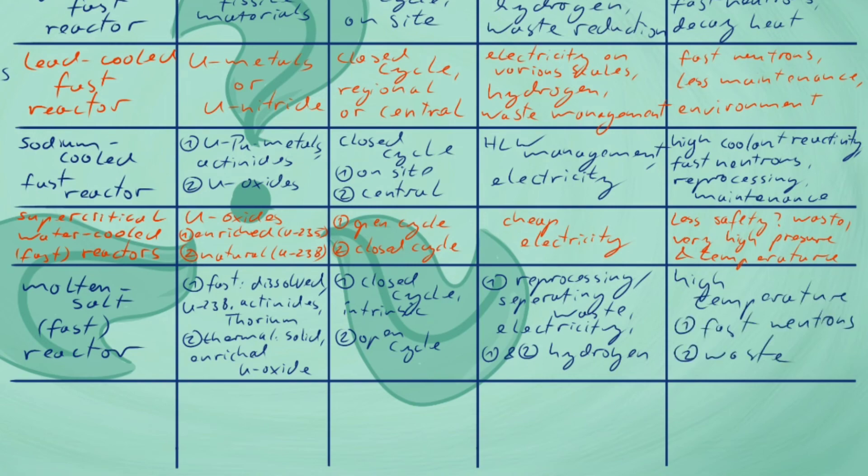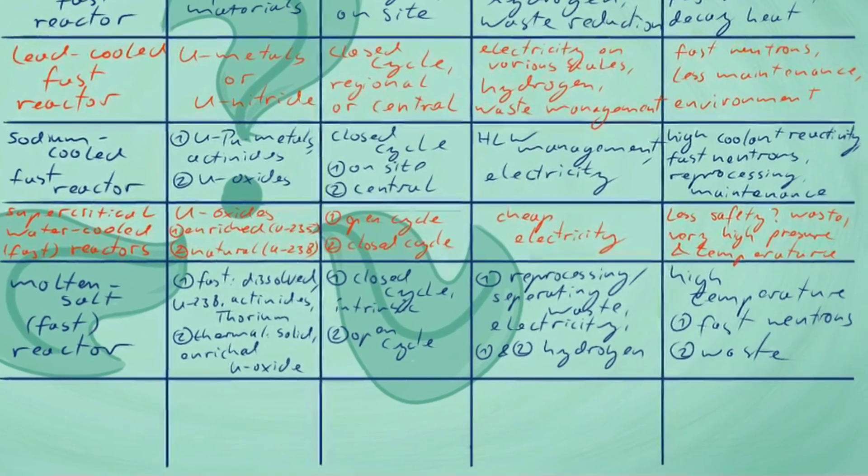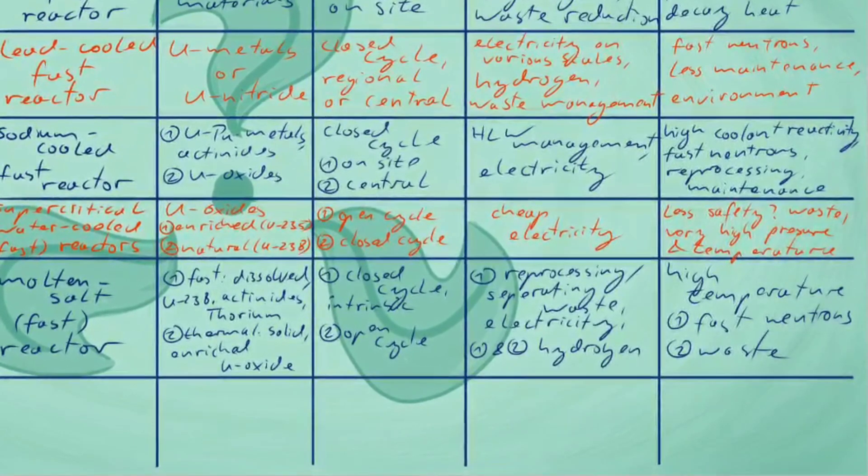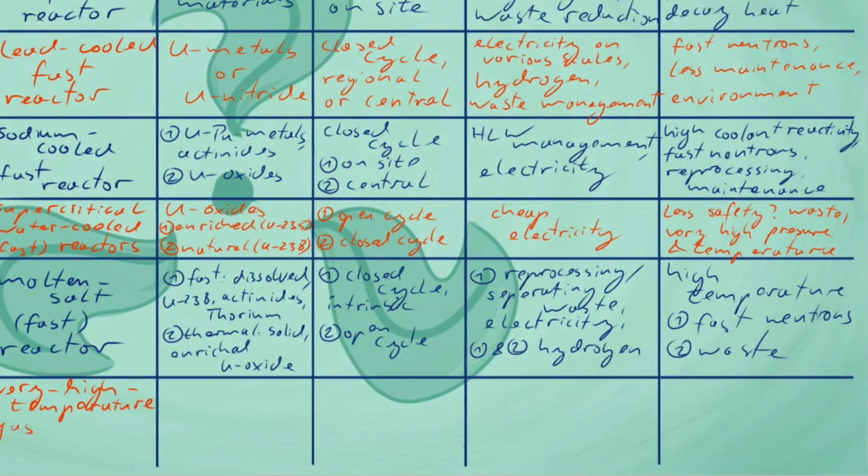The very high-temperature gas reactor will be one with thermal neutrons, moderated by graphite and cooled with helium at an exit temperature of 900 to 1000 degrees Celsius. As fuel, it uses enriched uranium oxide encapsulated in prisms or pebbles. But there is no initial recycling capability, as with fast reactors.